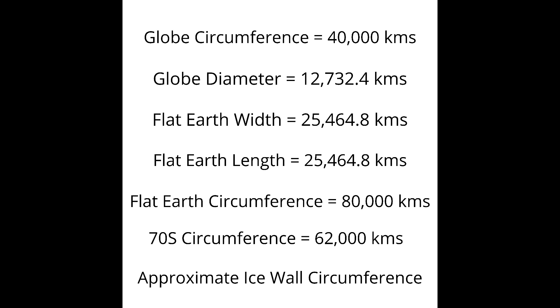The flat earth distances I'm using are based on the globe having a circumference of 40,000 kilometres. That gives us a diameter of 12,732 kilometres, which represents the North Pole to the South Pole distance in a straight line. So double that to be the entire width of a flat earth. Also double the earth's circumference of 40,000 kilometres to get the flat earth's circumference of 80,000 kilometres. By the way, at the 70 degree mark or close to the ice wall, that would make the circumference around 62,000 kilometres, which matches the figure mentioned by Captain James Ross from Ross Ice Shelf fame. Anyway, lots more to follow on this important topic.